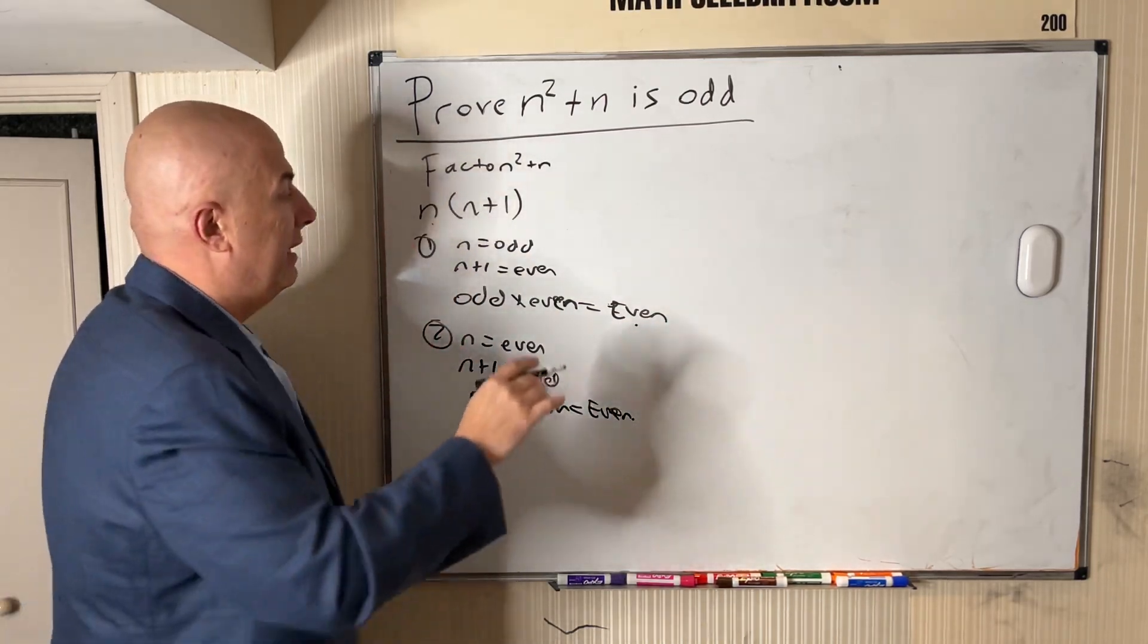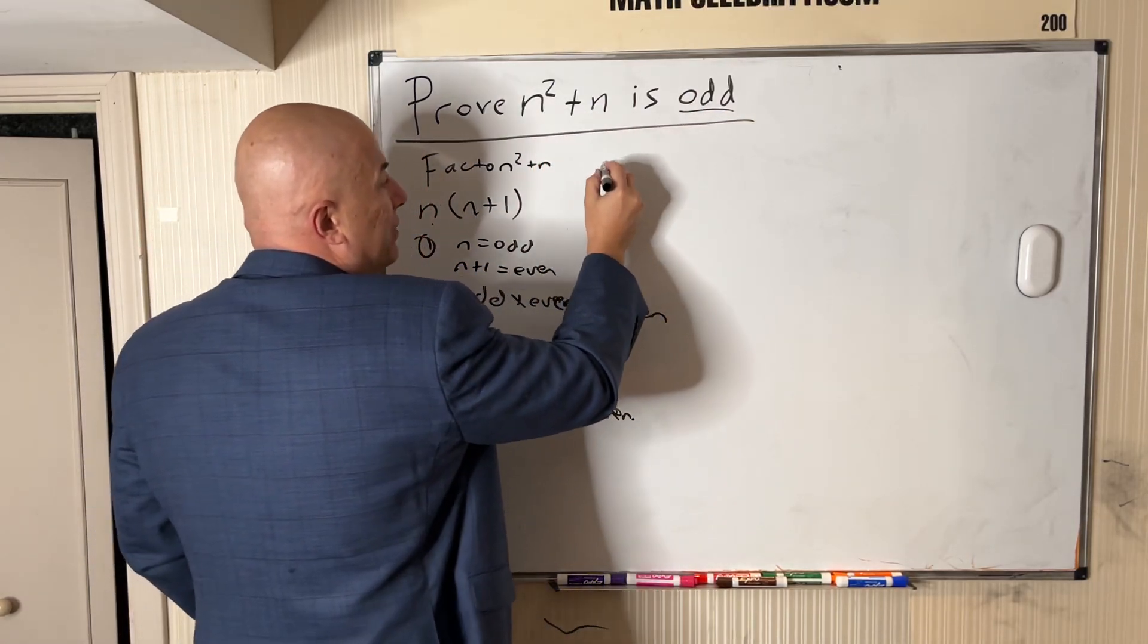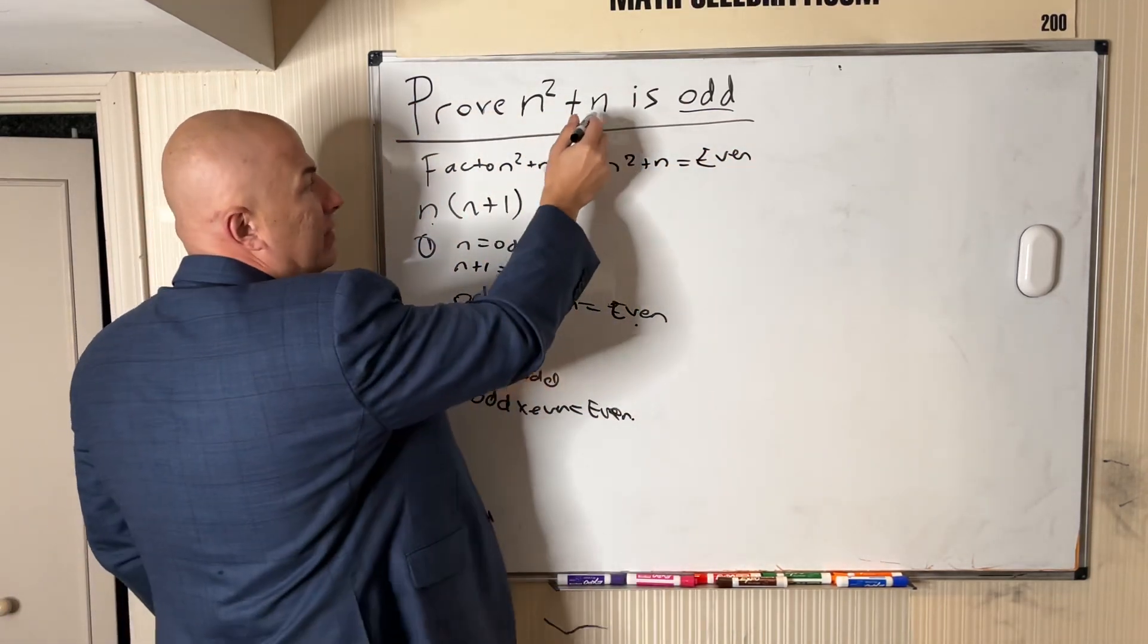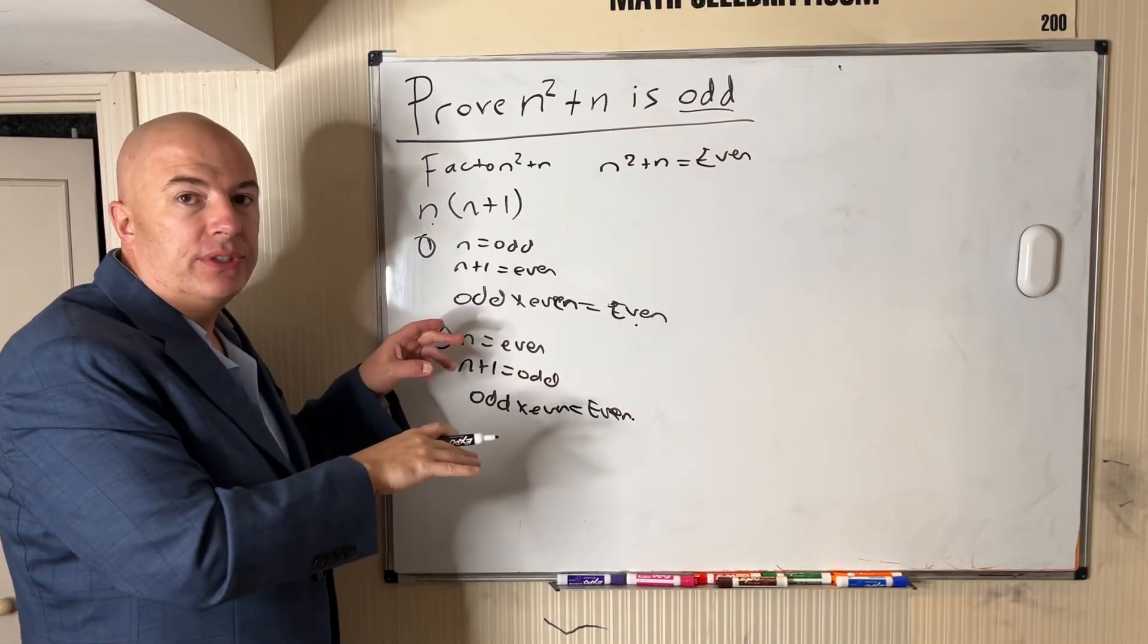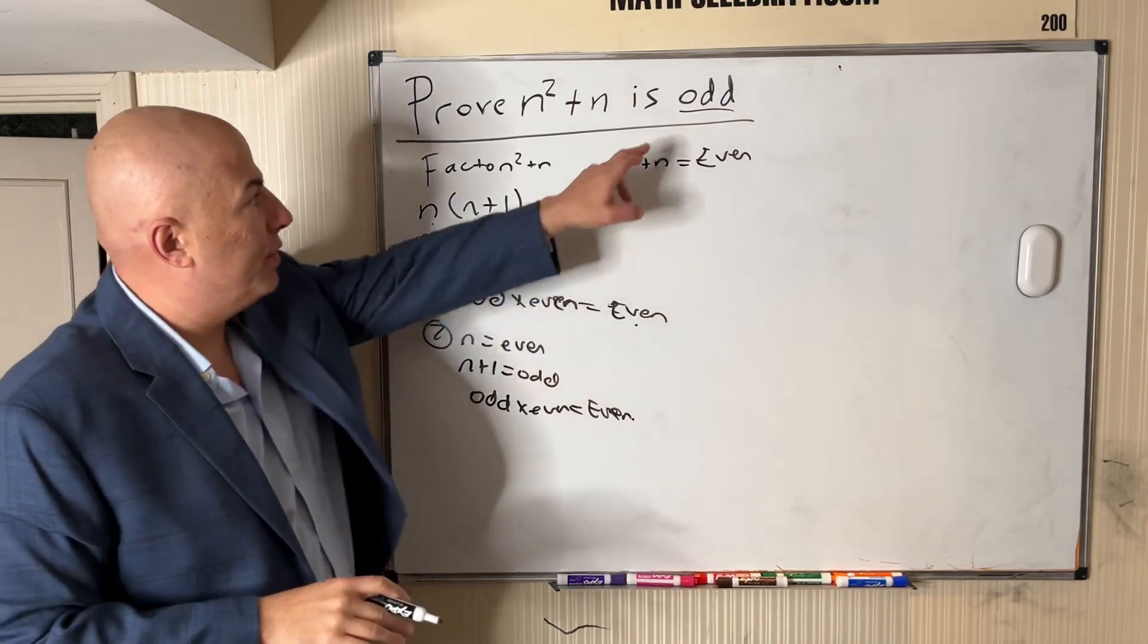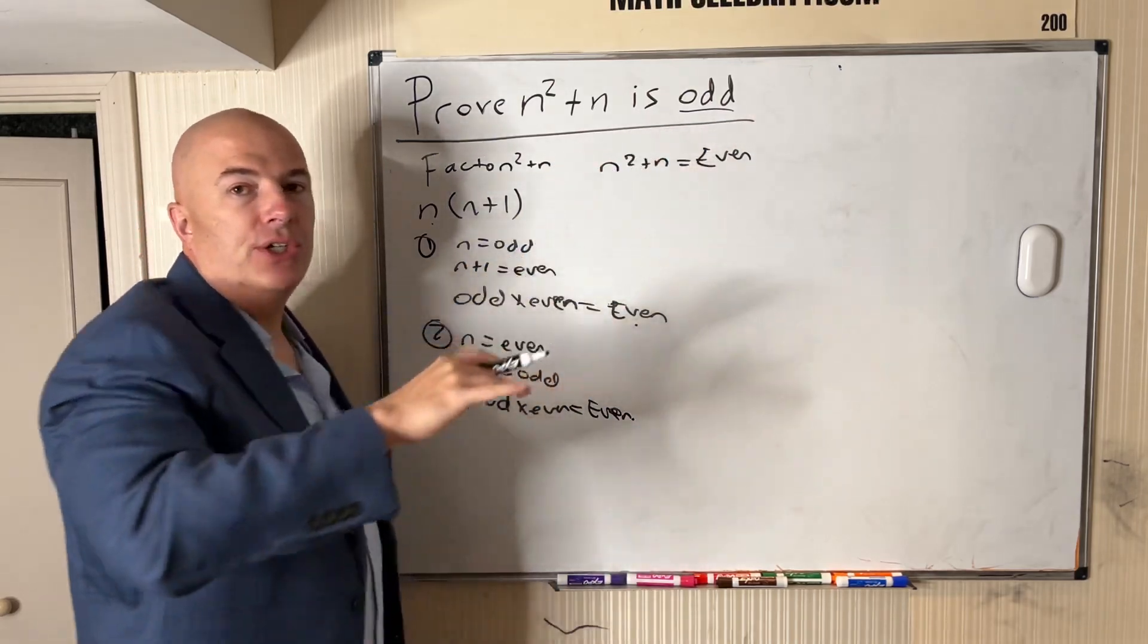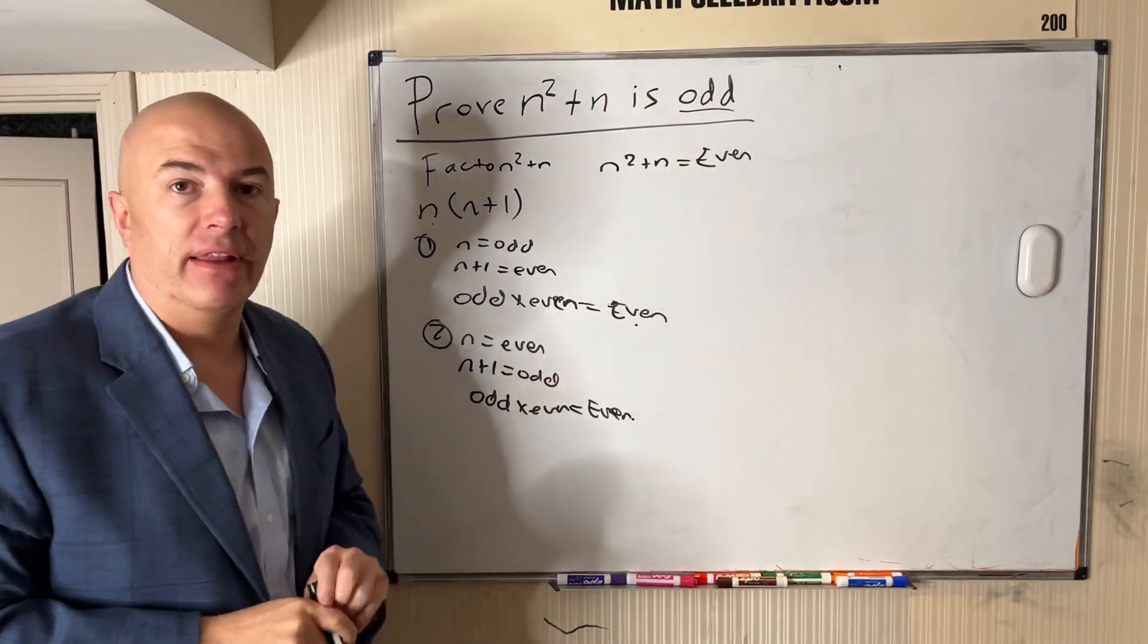So we've actually disproven this, and really n squared plus n is always even. I should add at the beginning here that n is always an integer. We've taken two scenarios, we've showed either or, that exhausts all possible scenarios, and we showed that this is false. If this is ever stated as is even, then it's true. But if it is odd, your job is to either prove it or disprove it, and in this case we've disproven it. Thanks for watching.